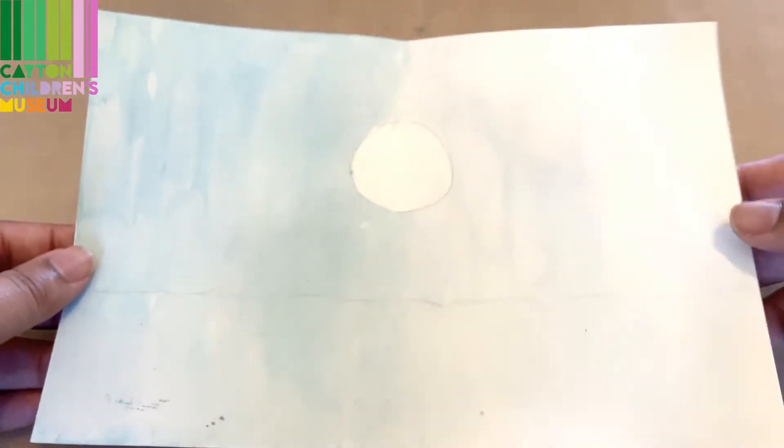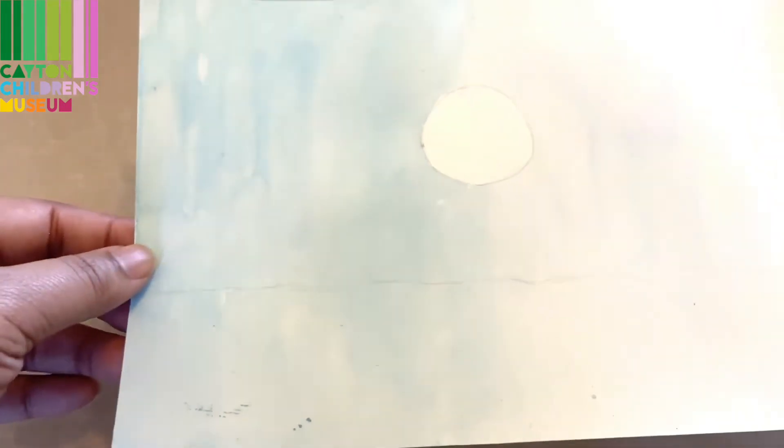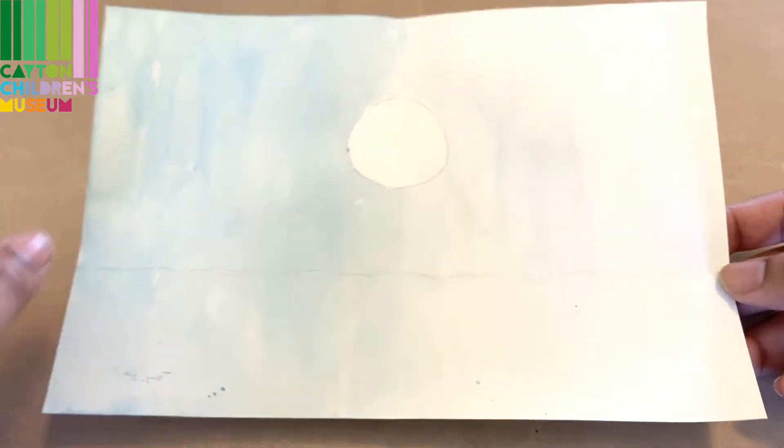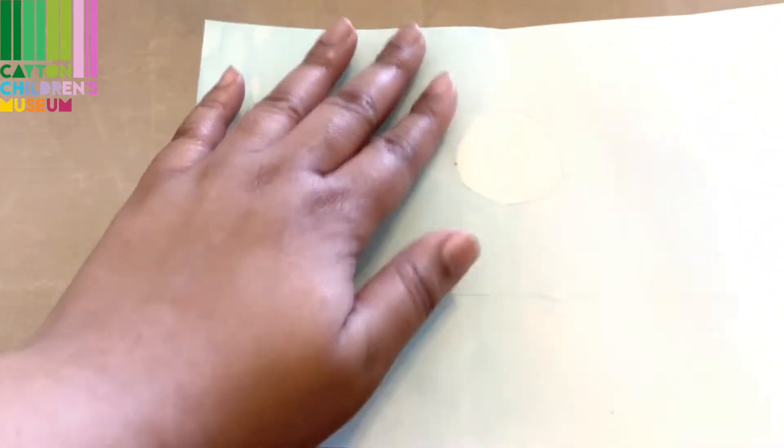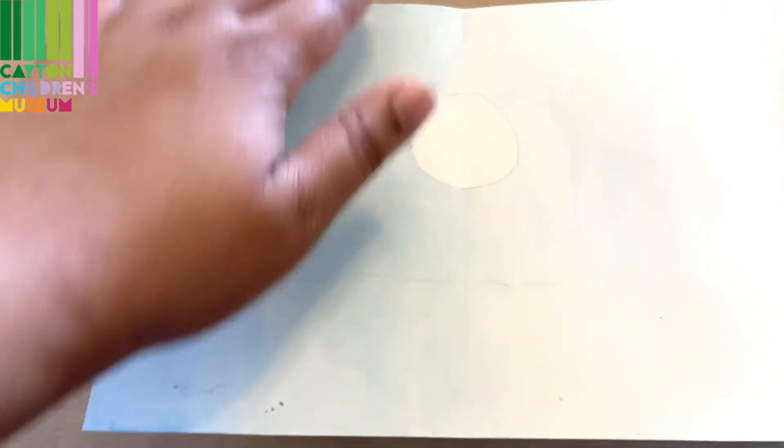So I've laid down my base color, which is blue. If you'll notice, this side is lighter than this side. So this is going to be my daytime, and this is going to be my nighttime.